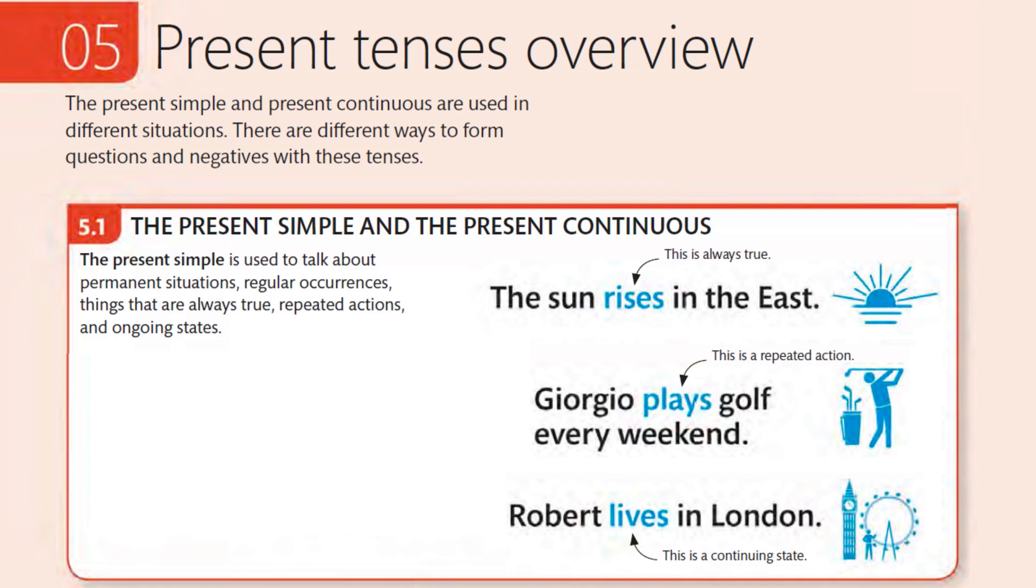The Present Simple and the Present Continuous. The Present Simple is used to talk about permanent situations, regular occurrences, things that are always true, repeated actions, and ongoing states.